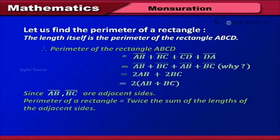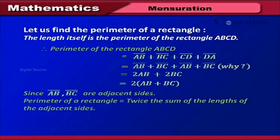The perimeter of rectangle ABCD is equal to AB + BC + CD + DA, which equals AB + BC + AB + BC, giving us 2AB + 2BC, which equals 2(AB + BC), since AB and BC are adjacent sides. Therefore, the perimeter of a rectangle is equal to twice the sum of the lengths of the adjacent sides.